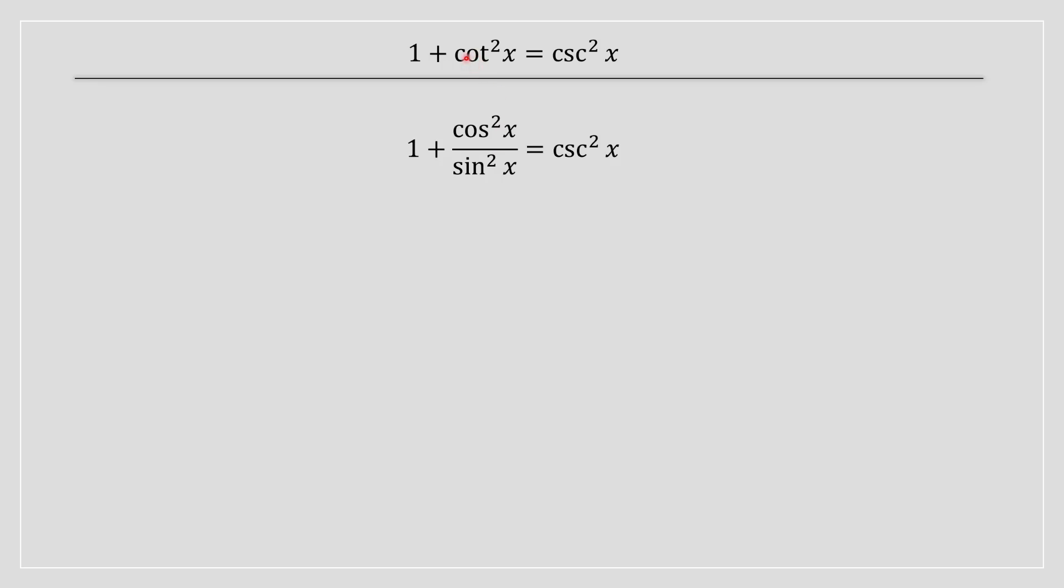we're going to replace cotangent squared of x with this, basically a trig identity. Cotangent of x can be rewritten as cos of x divided by sine of x. That's basically what I did over here. Since we got a squared exponent over here, this is going to